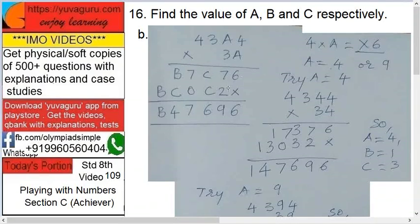B7, C76 and B60, C2 and answer is B4769, 6. Now see here. 4 into A is something 6. Okay. So it can be what? What can be A? 4 into what?